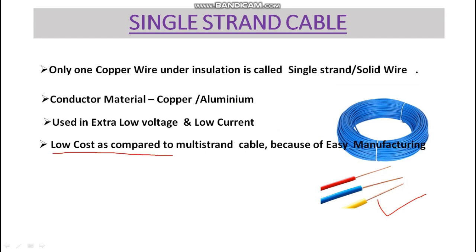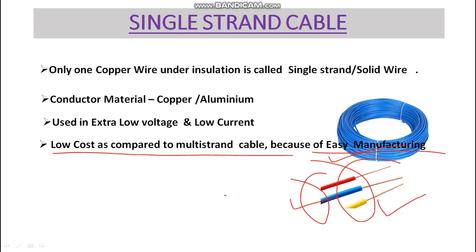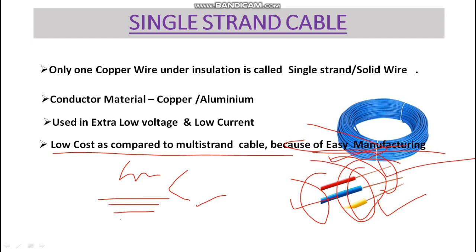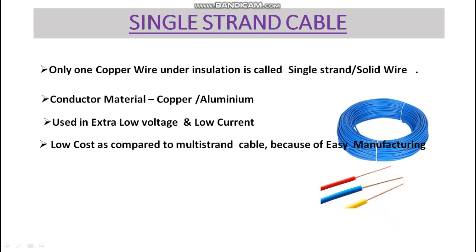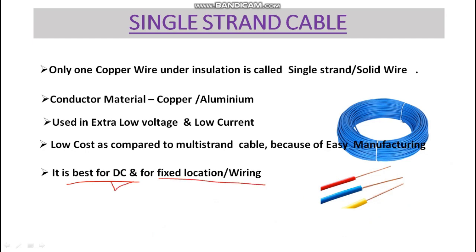Single-strand cable has a lower cost compared to multi-strand cable because of its easy manufacturing process. In multi-strand, separate copper wire strands have to be bundled and then insulated, increasing the process complexity compared to solid wire.